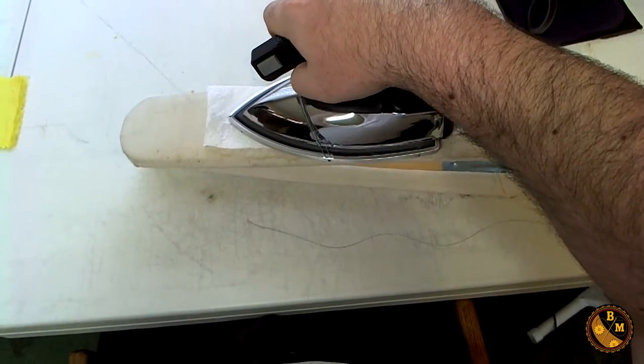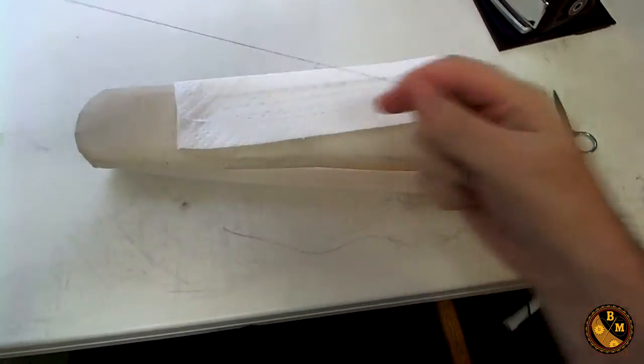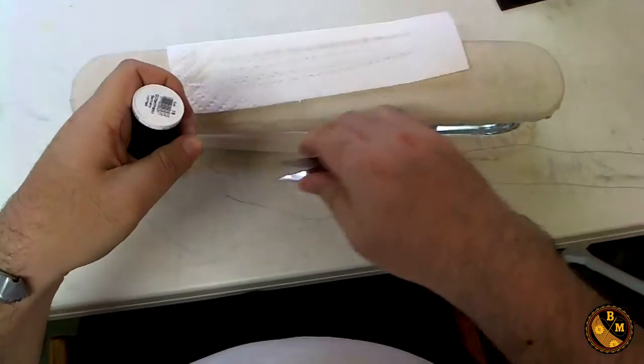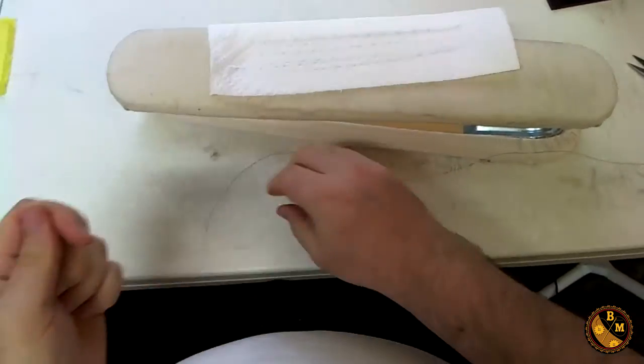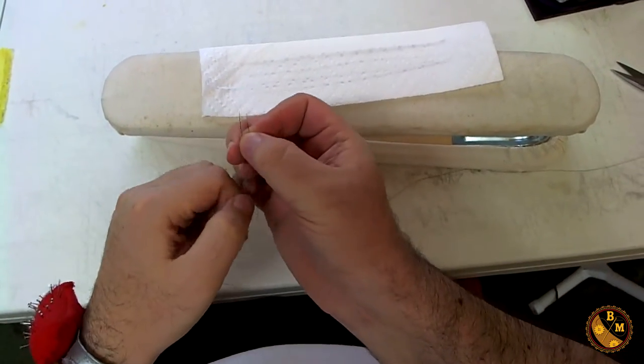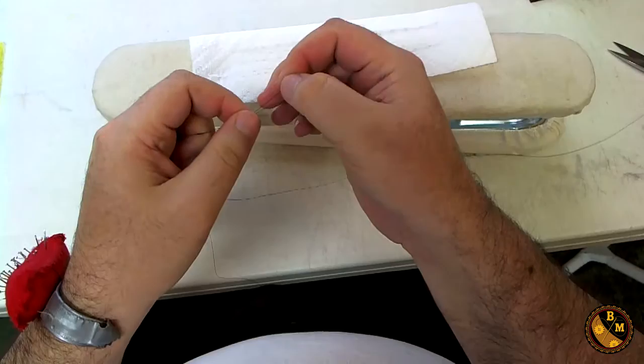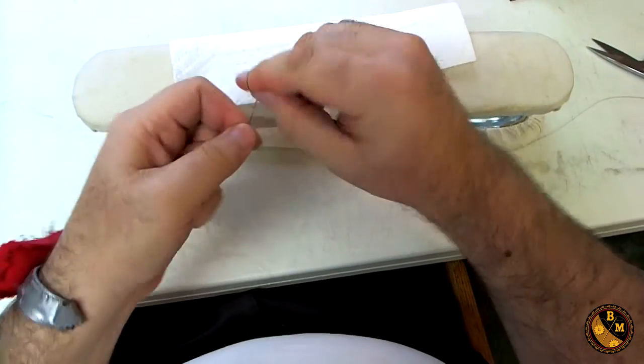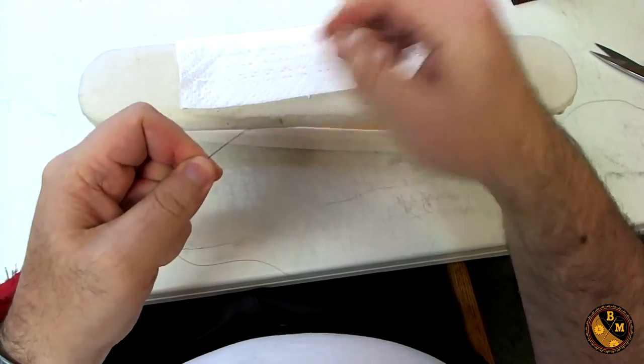Now after you have your thread waxed, let's say you have four or five different pieces of thread. It can get pretty messy. What you do is just tie a knot on one side here. Keep them together.